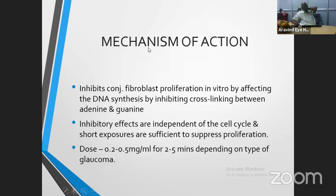How does mitomycin act? The mechanism of action is mainly inhibiting conjunctival fibroblast proliferation in vitro by affecting DNA synthesis — inhibiting cross-linking between adenine and guanine. This is the main mechanism of action. Also, its inhibitory effects are independent of the cell cycle, and short exposures are sufficient to suppress proliferation — independent of the cell cycle, that's the key point.